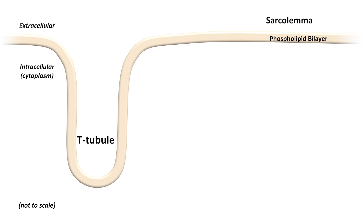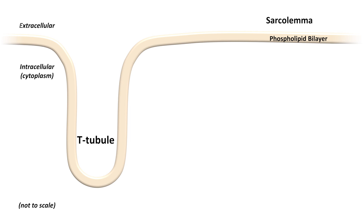The lumen of the T-tubule is contiguous with the extracellular space. The T-tubules allow for the rapid spread of the action potential to the interior of the cardiomyocyte, and they provide increased surface area for certain ion channels and pumps. For example, the membrane of the T-tubules contains a high concentration of L-type calcium channels.